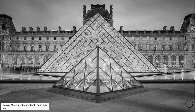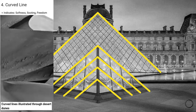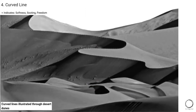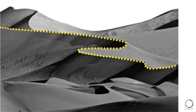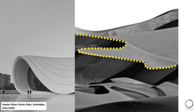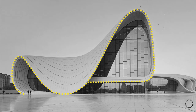The diagonal line is applied in architecture as seen in the Livery Museum by Morphosis. Next is the curved line, which indicates softness, soothing quality, and freedom, illustrated through desert dunes. This can be observed in the amazing structure by Zaha Hadid called the Heydar Aliyev Center. This is how a point transforms into different types of lines, each creating a sense of emotion.